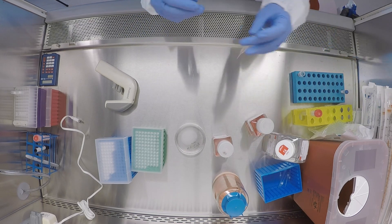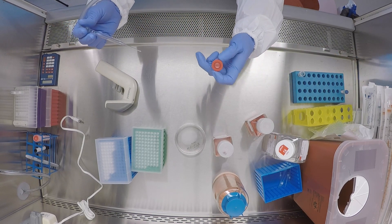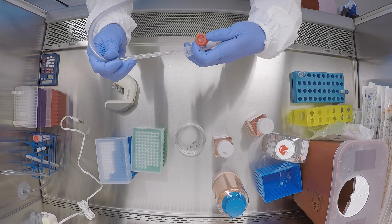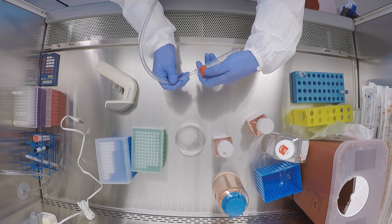I'm going to go ahead and aspirate the supernatant out of the conical. I just want to be careful that I don't disrupt the pellet, so I like to tilt it and just take the aspirator tip to sort of the bend in the conical.